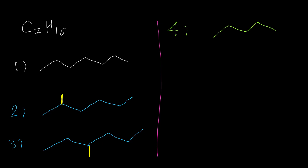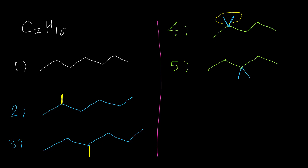After that, we have five carbons in the chain and two more carbons as substituents. These two carbons may be two separate methyl groups, or one ethyl group. For the first option, I put both carbons on carbon number two — that's isomer four. I'm also able to put both carbons on carbon number three — that's isomer five.